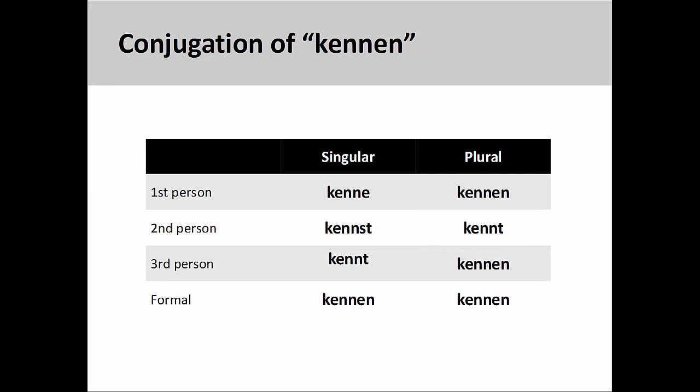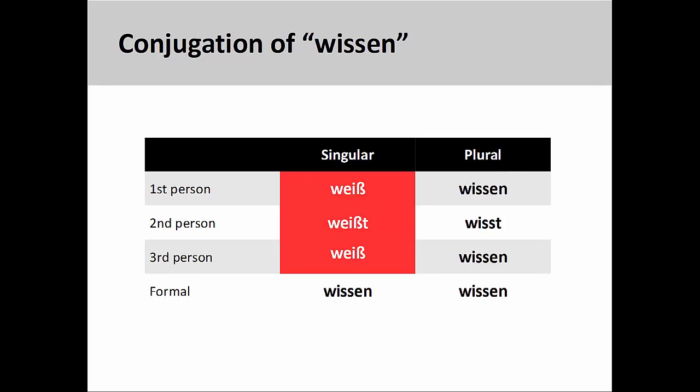Kennen has a regular conjugation pattern with no stem-vowel changes, whereas Wissen, as we have seen in an earlier presentation, has a stem-vowel change and an unusual conjugation pattern in the first-, second-, and third-person singular.